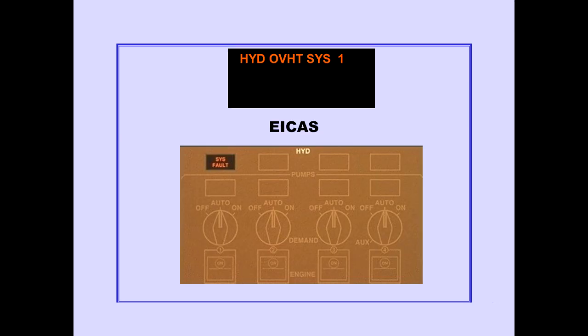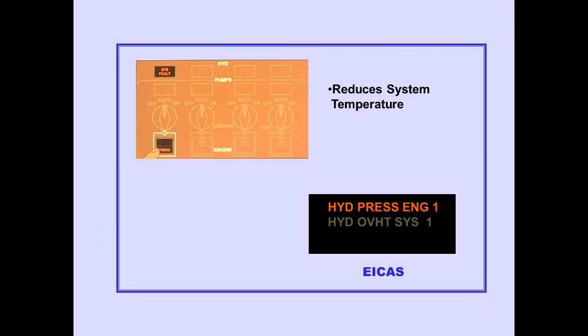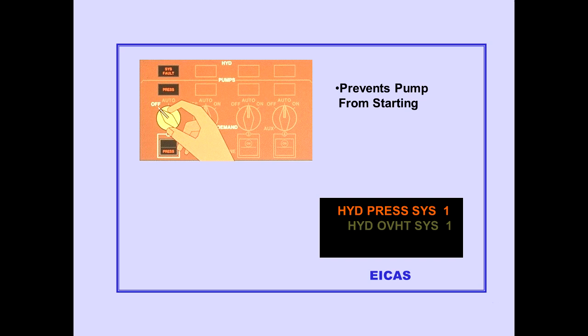Let's now discuss excessive hydraulic fluid temperature. The ICAS advisory message, Hydraulic Overheat System, is displayed when the hydraulic fluid temperature in a system becomes excessive. The system fault light illuminates. Pushing the affected engine pump switch off helps reduce the hydraulic system temperature; the ICAS advisory message, Hydraulic Pressure Engine, is displayed. Rotating the demand pump selector off prevents the demand pump from starting as the engine pump pressure decreases. With the engine pump switch off and the demand pump selector off, the ICAS caution message, Hydraulic Pressure System, is displayed.